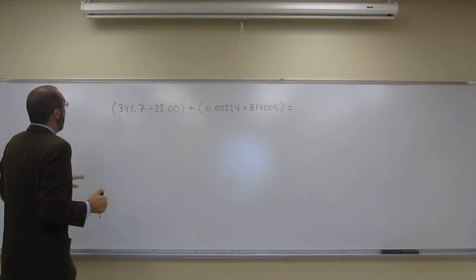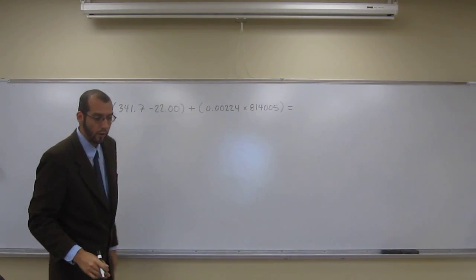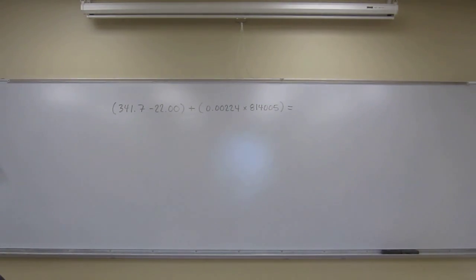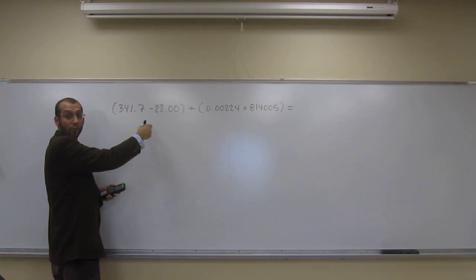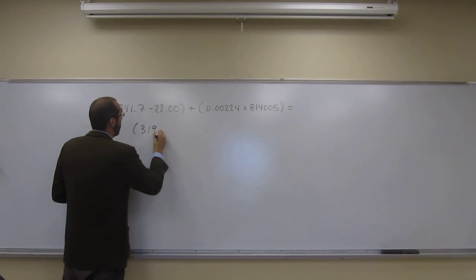So let's do this part. So 341.7 minus 22. And of course this would have been to one after the decimal place, but when we look at the calculator it gives us that. 319.7.